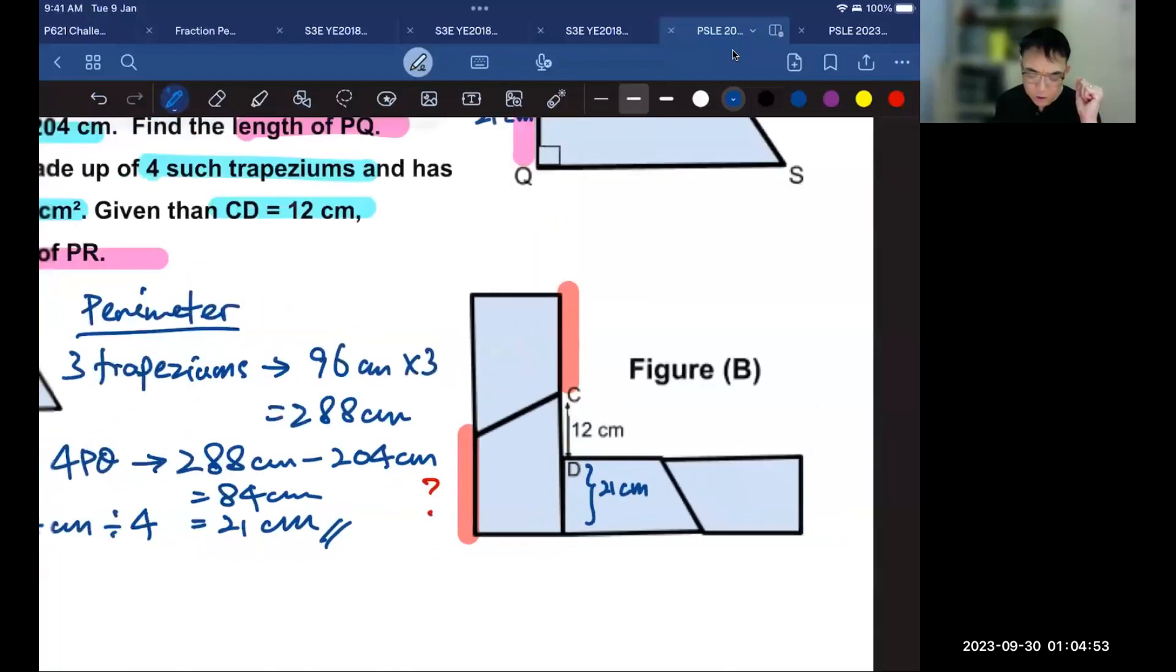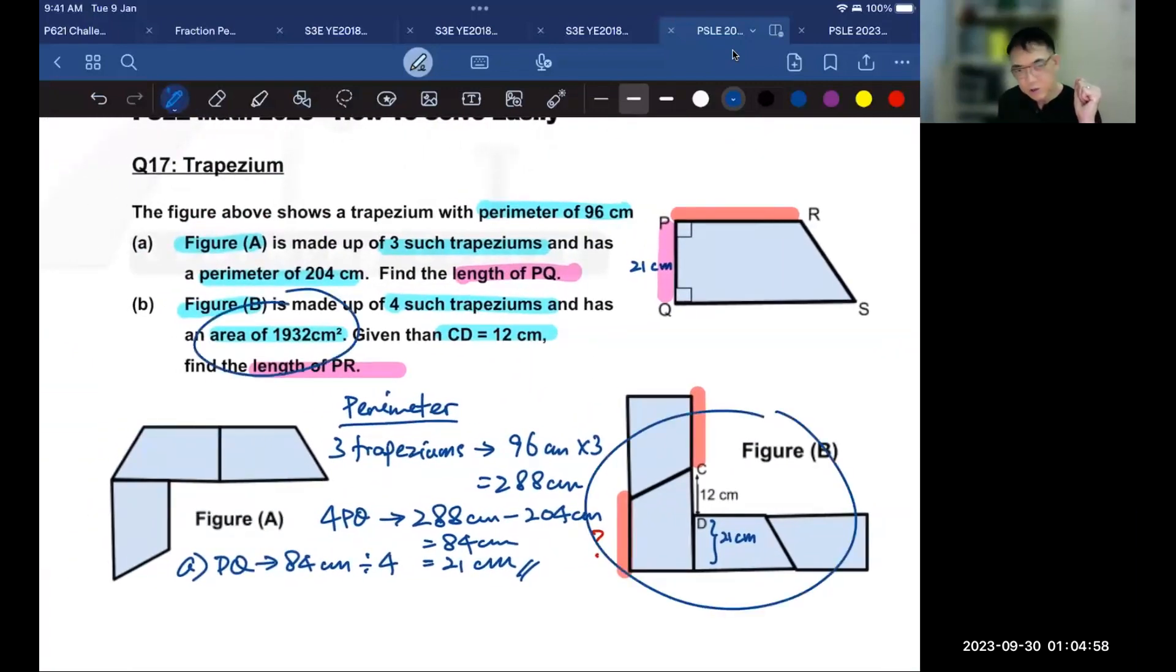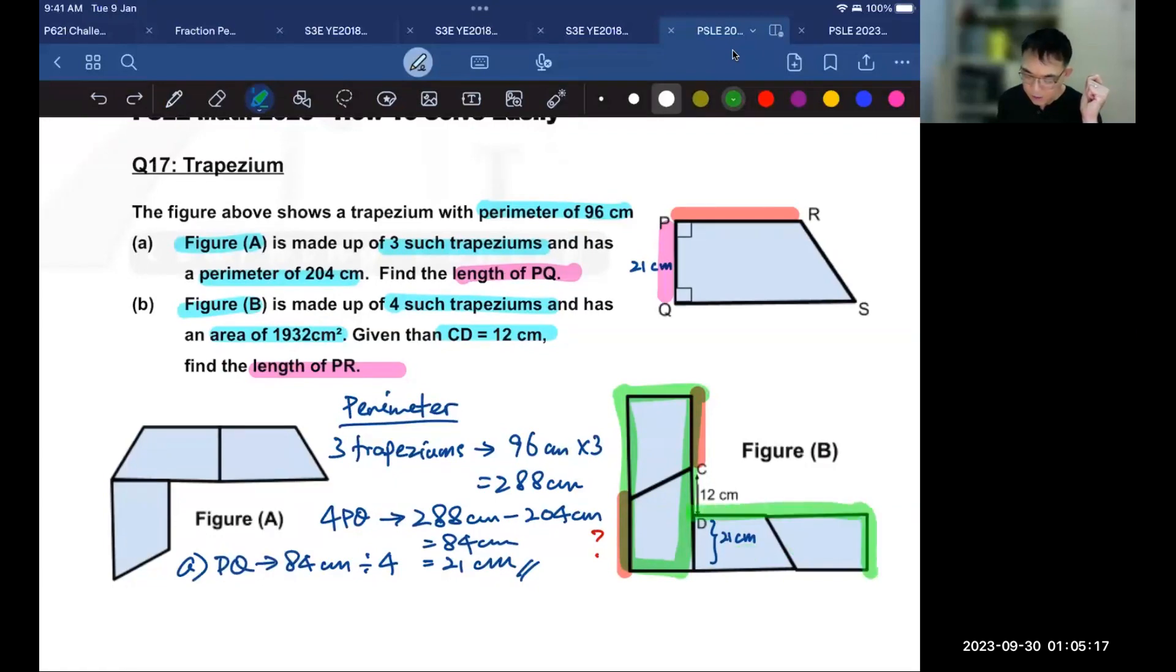Let us go back to the question. It says that the area of all the trapeziums here is 1932. If we were to consider these two trapeziums as a rectangle, and these two trapeziums as another rectangle, then two rectangles will have a total area of 1932. If I were to take 1932 divided by 2, then I will be finding the area of each of the rectangles.